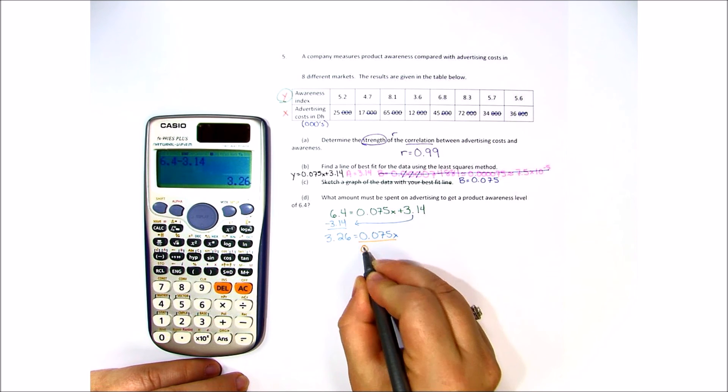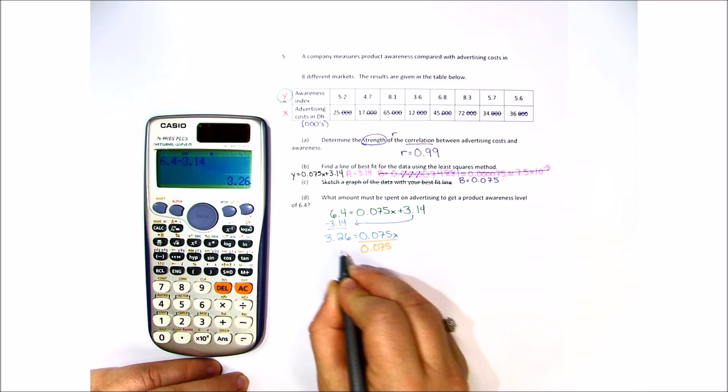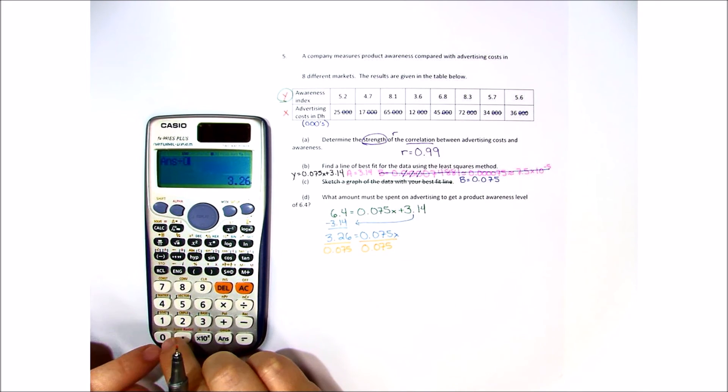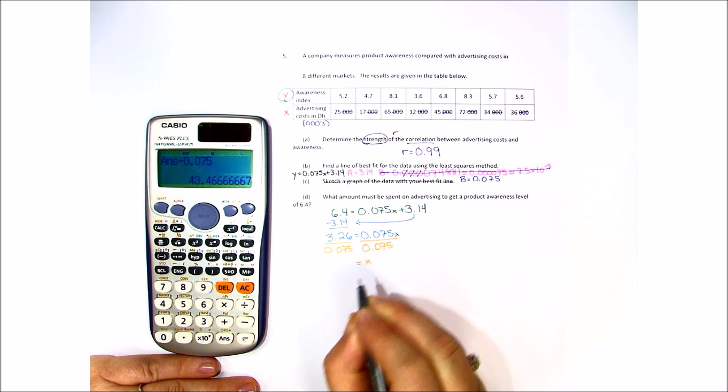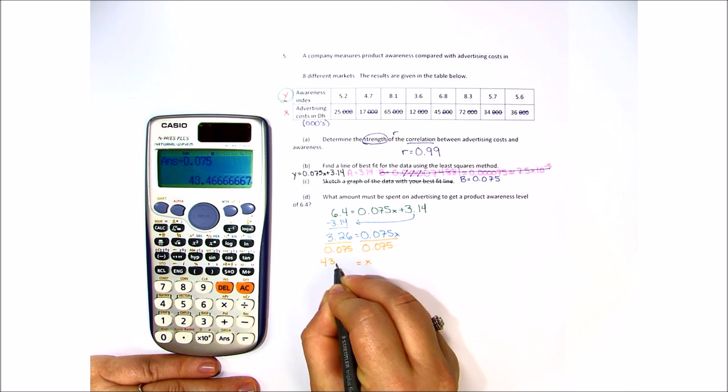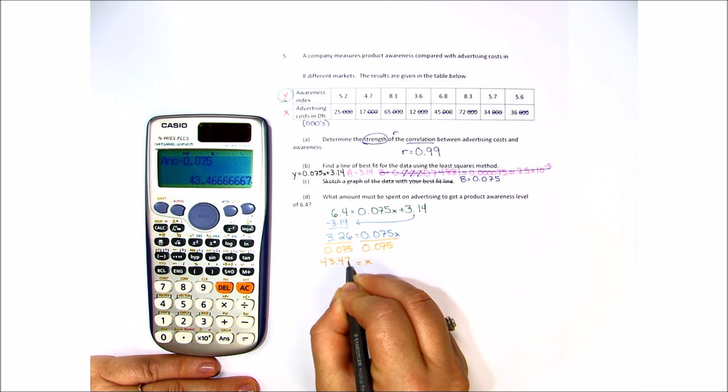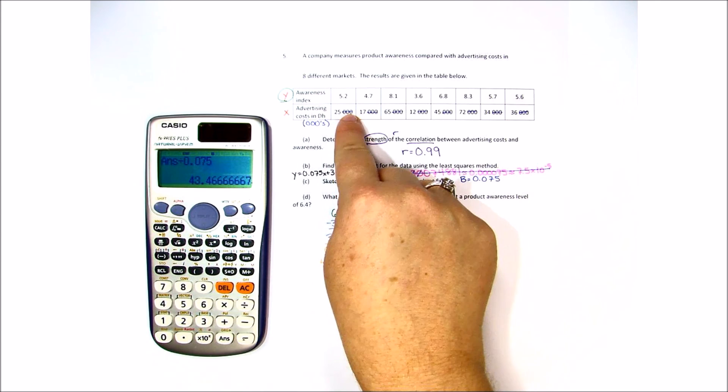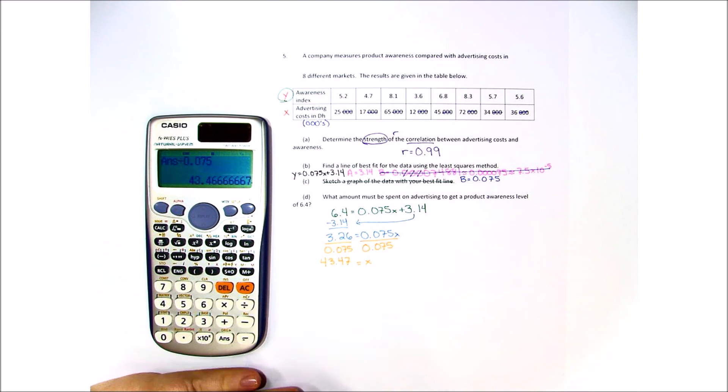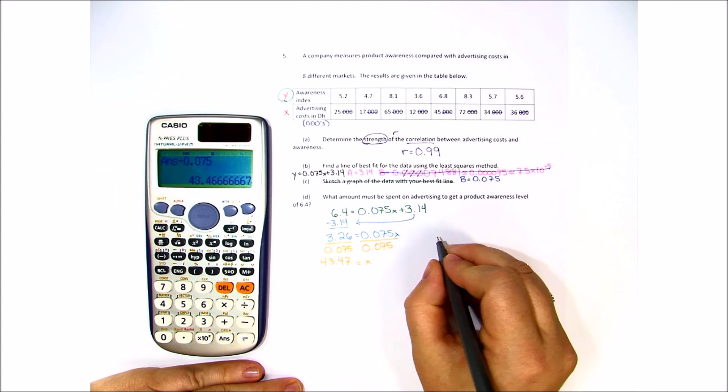So divided by 0.075, and we get that x should be 43.47. Now remember that we had the advertising costs in thousands and we changed it to whole numbers. So when we reply, we need to say that our advertising costs will include those zeros.